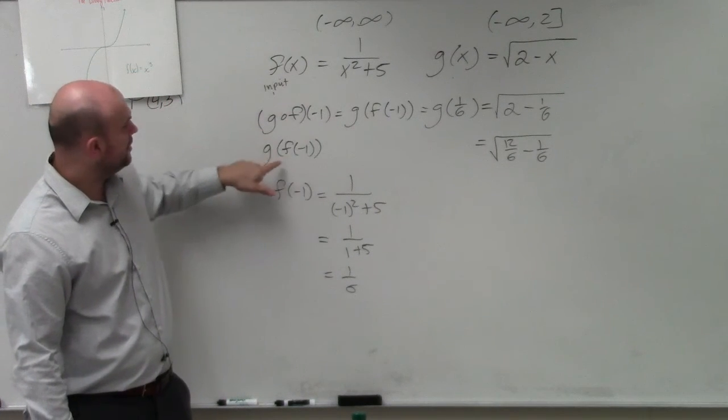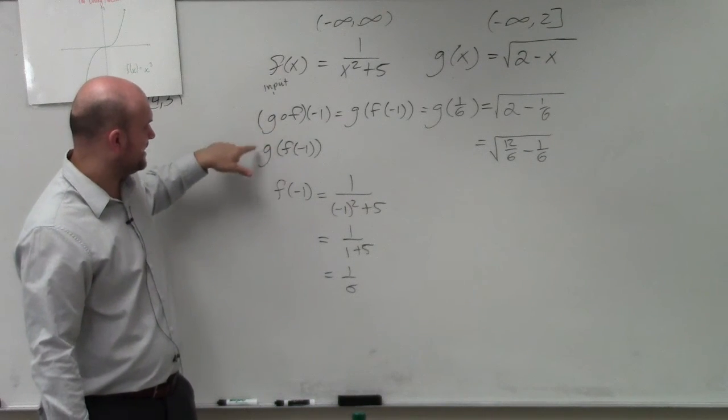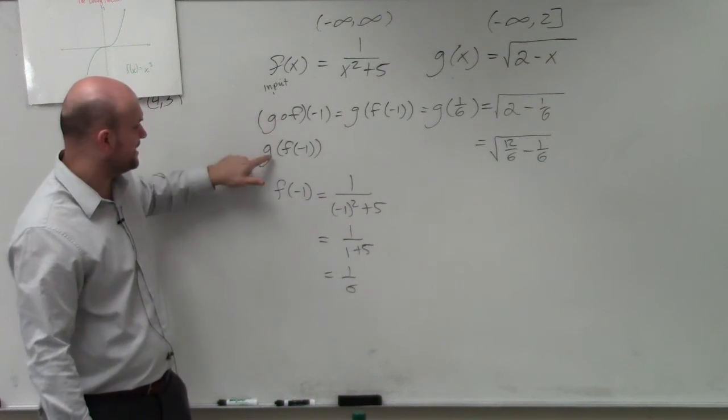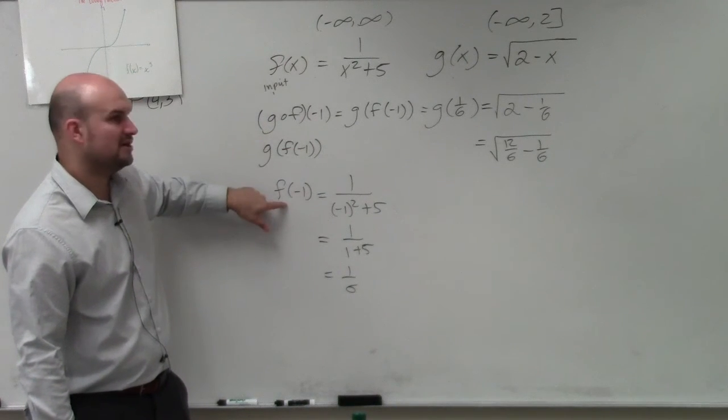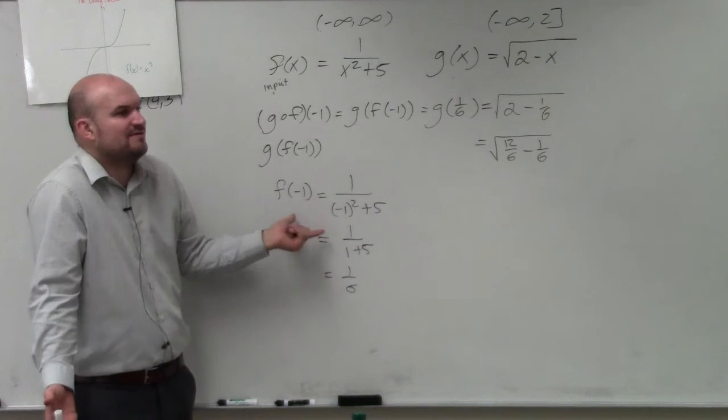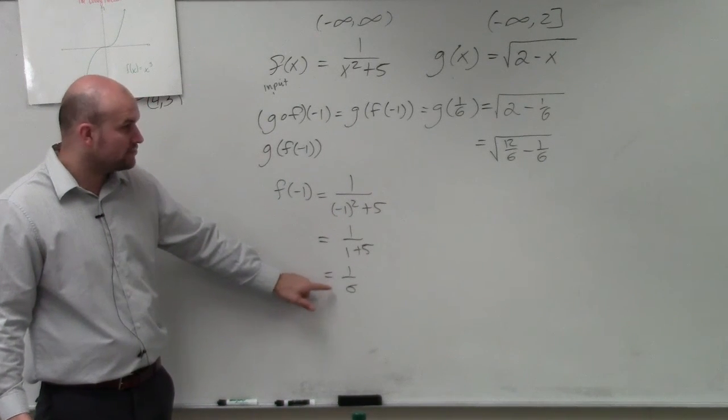So this function, g of f of negative 1 - well, what's f of negative 1? I just plug negative 1 in. How do we evaluate functions? You just plug negative 1 in for x, right? And therefore, f of negative 1 equals 1 over 6. So therefore, I replaced f of negative 1 with 1 over 6.